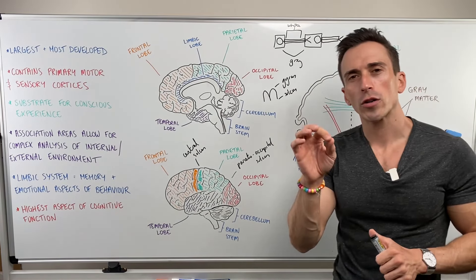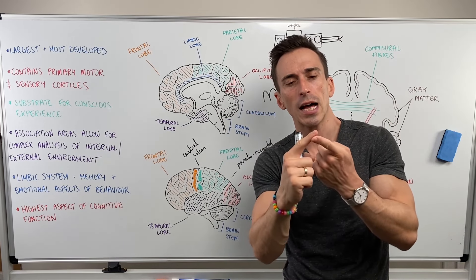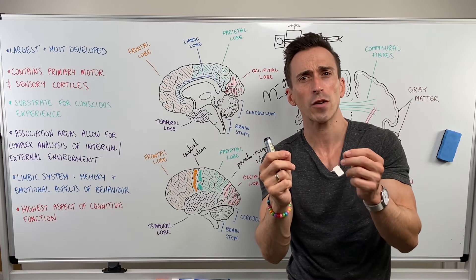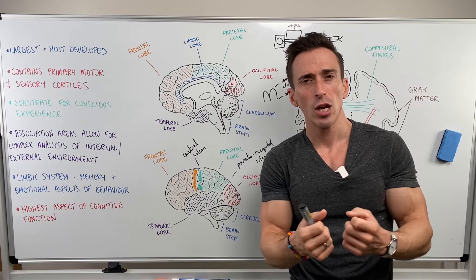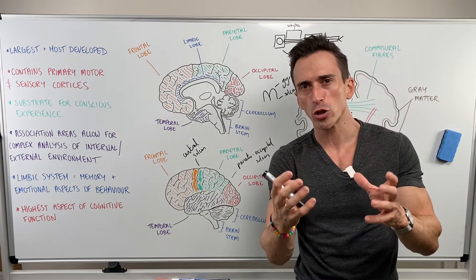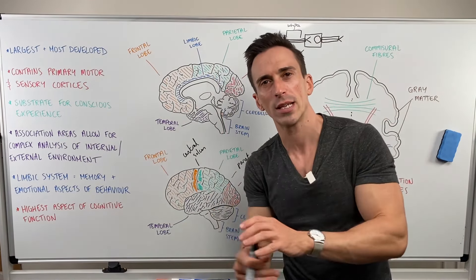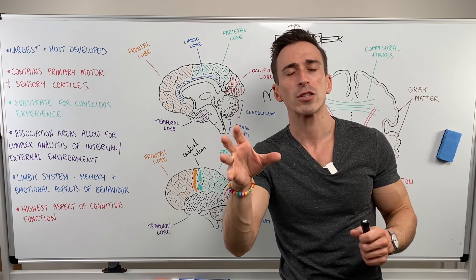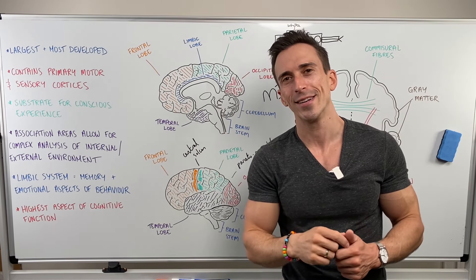In a future video, I'm going to focus on each of those lobes. But to summarize: the cerebral hemispheres are the largest, most complex, and most developed part of the brain. They allow for conscious awareness, have lobes with particular functions, higher-order cognitive function, limbic areas for emotional and behavioral understanding, association areas, primary motor and sensory areas, and fibers — axons that project to other parts of the cerebral hemispheres and deeper parts of the brain as well.